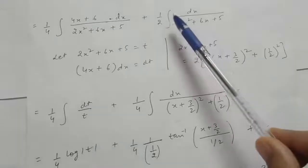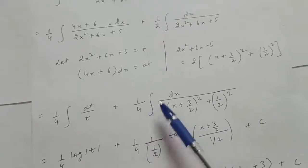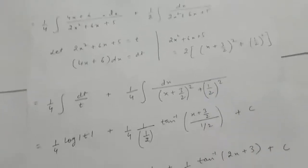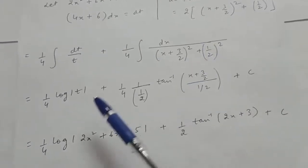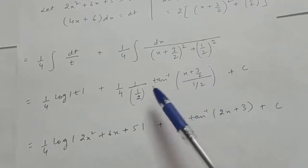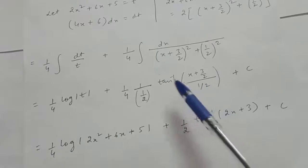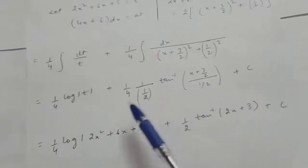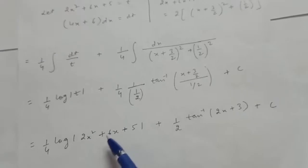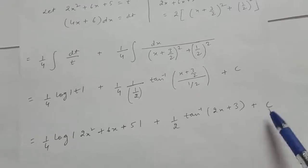Taking the 2 outside gives (1/4) times integral of 1/((x + 3/2)² + (1/2)²) dx. The first integral gives (1/4) log|t|, and the second gives (1/2) tan⁻¹((x + 3/2)/(1/2)) times (1/(1/2)) plus c. Substituting back t, the final answer is (1/4) log|2x² + 6x + 5| + (1/2) tan⁻¹(2x + 3) plus c.